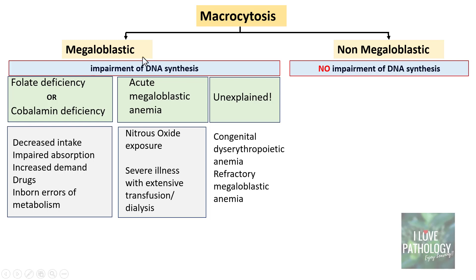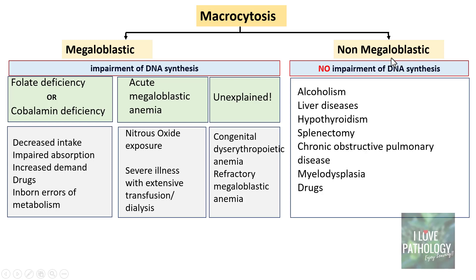Non-megaloblastic macrocytosis can be caused by alcoholism, liver diseases, hypothyroidism, splenectomy, chronic obstructive pulmonary disease, myelodysplasia, or certain drugs. In these conditions there is no impairment of DNA synthesis, yet the RBCs are larger than normal.